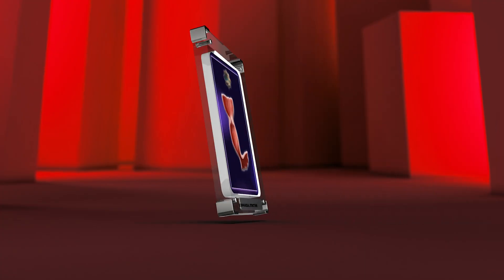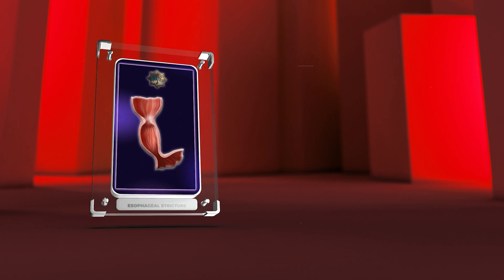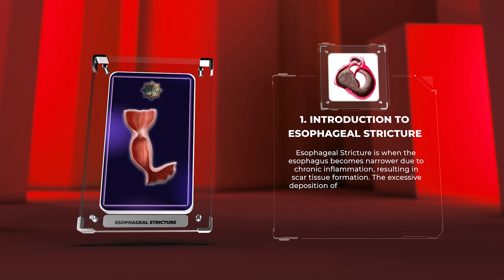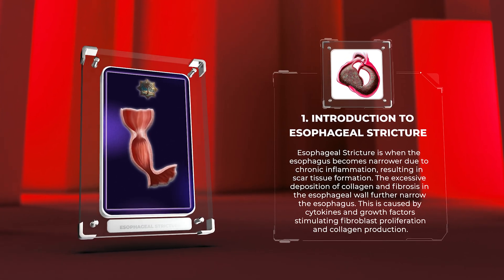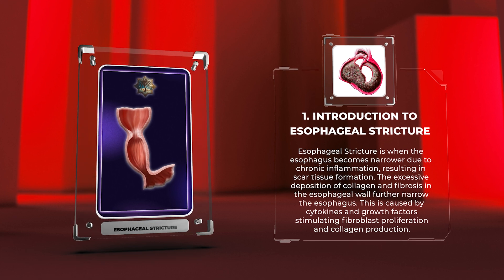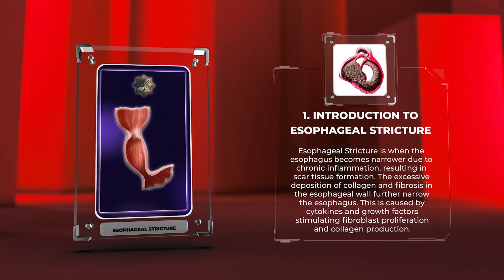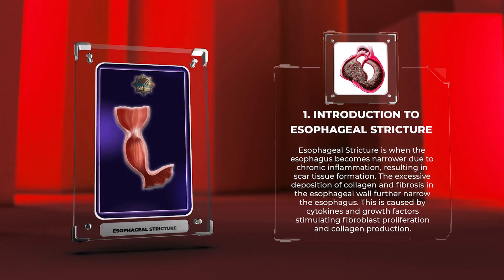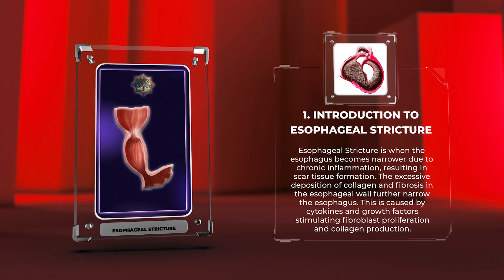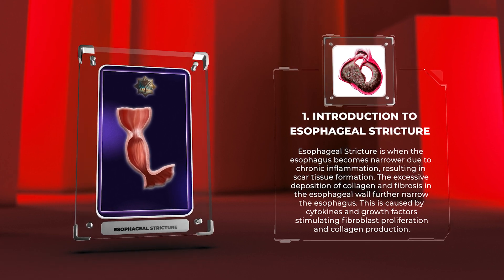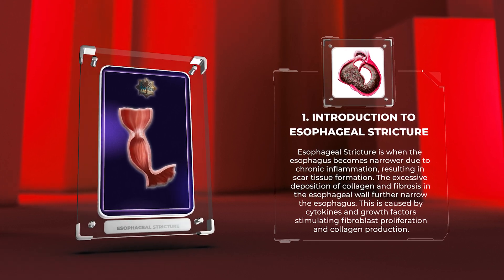Esophageal stricture is when the esophagus becomes narrower due to chronic inflammation, resulting in scar tissue formation. The excessive deposition of collagen and fibrosis in the esophageal wall further narrows the esophagus. This is caused by cytokines and growth factors stimulating fibroblast proliferation and collagen production.